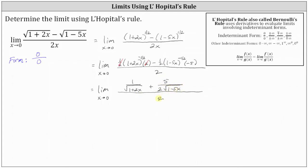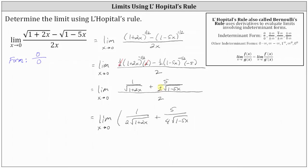Dividing by two is equivalent to multiplying by one half, so let's rewrite this by multiplying the numerator by one half. This gives us the limit as x approaches zero of one divided by the product of two and the square root of the quantity one plus two x, plus five divided by the product of four and the square root of the quantity one minus five x. Notice this two became four because we multiplied by one half.